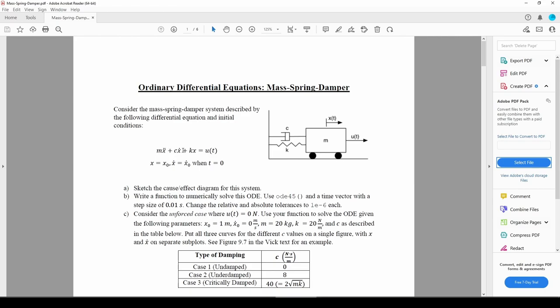c times x dot must have units of newtons, so that means that units of c equals newtons times second over meters, or equivalently, kilograms per second. Finally, the kx term we know represents the spring force, which we know has units of newtons as well.